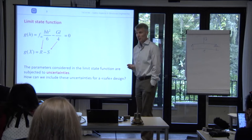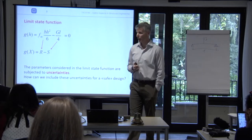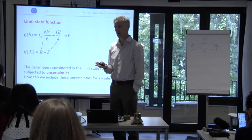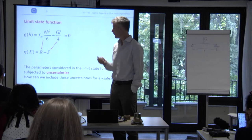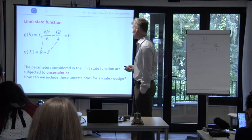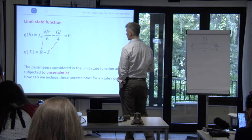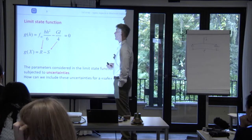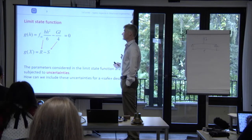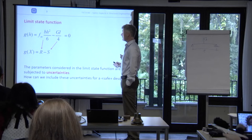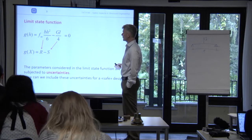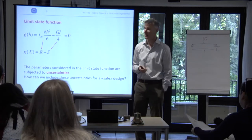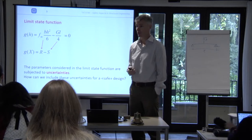We have to deal with uncertainties. If we knew all properties of the limit state function exactly, it would simply be a matter of deciding whether the function is positive or negative — positive means survival, negative means failure. But which variables are uncertain in a typical problem like this? Which properties don't we know exactly?